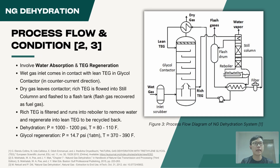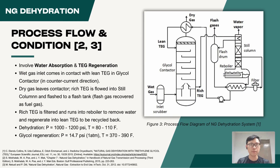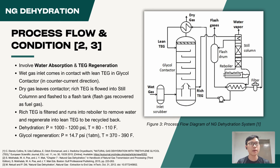In a typical natural gas dehydration system, the major processes include water content absorption and TEG regeneration, where natural gas is flown through a scrubber, then the glycol contactor where it comes in contact with lean TEG in counter-current direction.